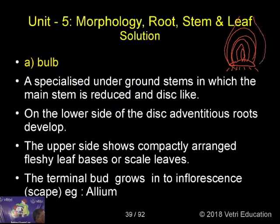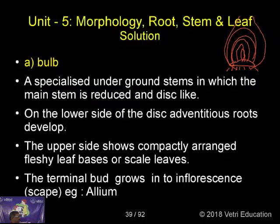Around this you can have the scale leaves, which form an onion. Bulb: a specialized underground stem in which the main stem is reduced. On the lower side of the disc, adventitious roots develop. On the upper side, compactly arranged fleshy leaf bases or scale leaves. The terminal bud grows into the inflorescence, which is called a scape.